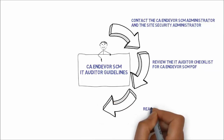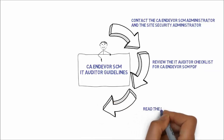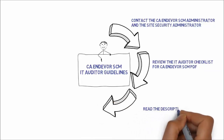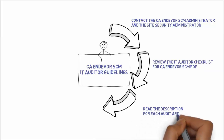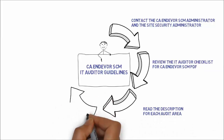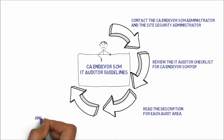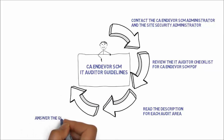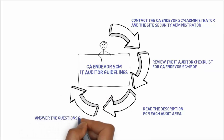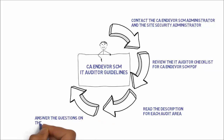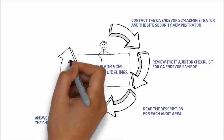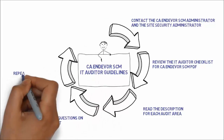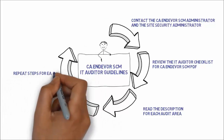Number three: read the description for each audit area. These descriptions can help you to understand the audit questions in the checklist. Number four: after you read the description for each audit area, see the corresponding questions in the checklist. Answer the questions to determine if that audit area is implemented and how it is used. Number five: repeat steps three and four for each audit area.